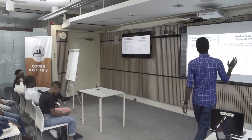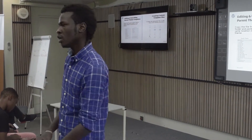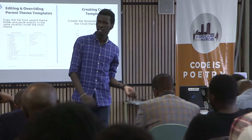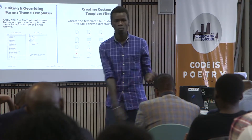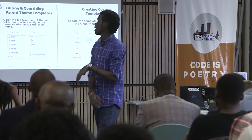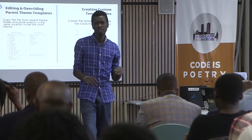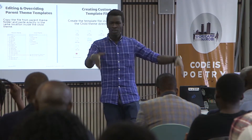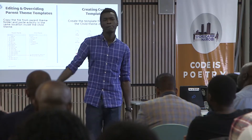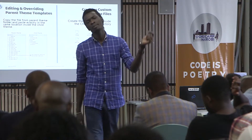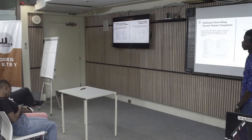If your theme doesn't have a template file for a page you need — like an About Us page, a 404 page, or a custom homepage layout — you can create one. Add a file named like page-404.php or page-homepage.php and customize it as needed. For example, if you need your homepage to have three columns instead of one, create that file in your child theme folder. WordPress will automatically pick the correct page template based on how you name it.